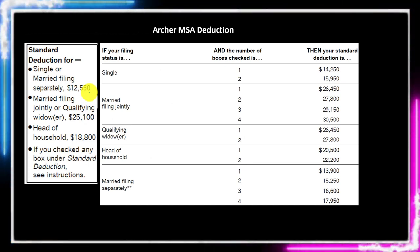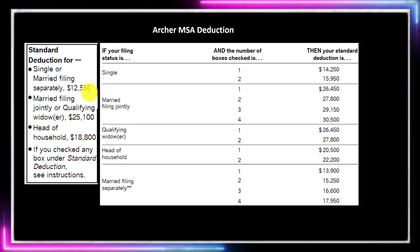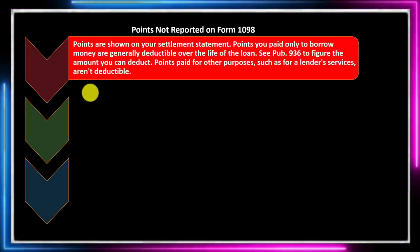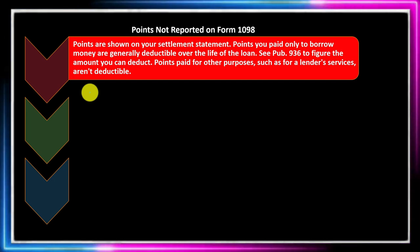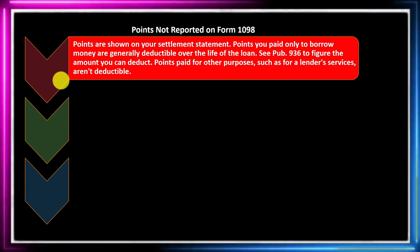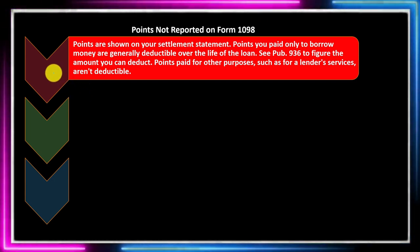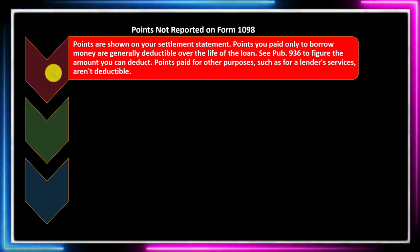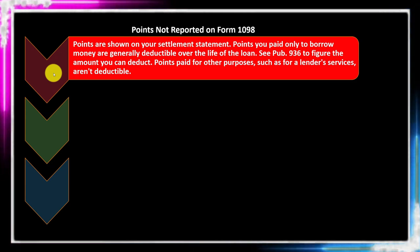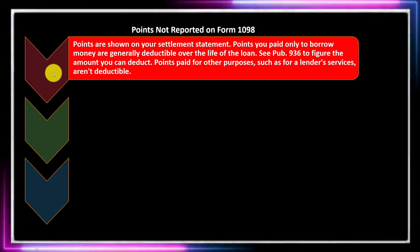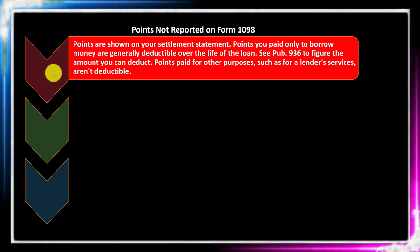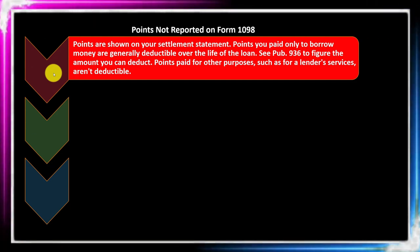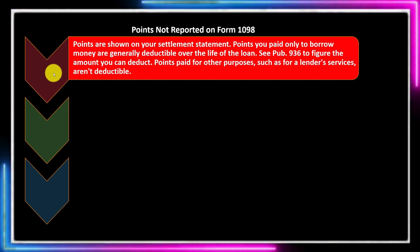You want to have a general idea of the standard deduction amounts so you can determine whether someone is likely to be able to itemize or not — and whether the return will be more complex. Now, continuing with mortgage interest: the mortgage interest is one of the biggest itemized deductions. When thinking about whether someone is itemizing, a key question is: do you own a home? If they own a home, they most likely have mortgage interest and property taxes.